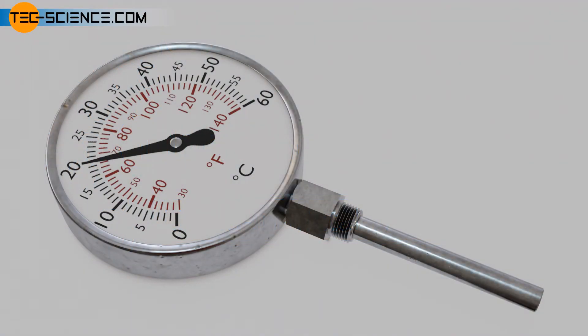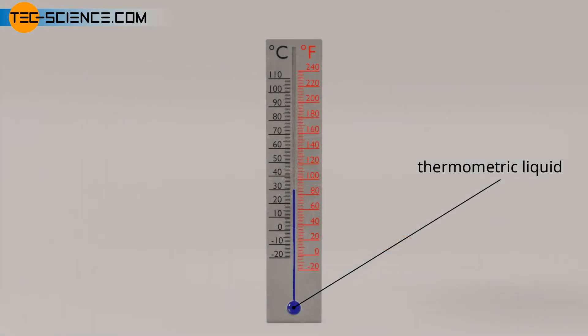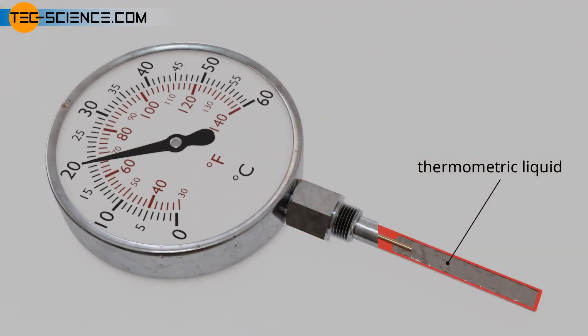In liquid-in-metal thermometers, also referred to as liquid-filled thermometers, a liquid is used as a thermometric substance in the same way as in liquid-in-glass thermometers. However, it is not the thermal expansion of the liquid that is measured, but rather the increase in pressure that goes hand-in-hand with an increase in temperature when the liquid completely occupies a closed volume.